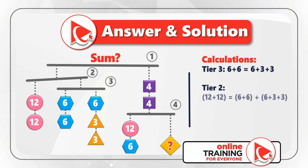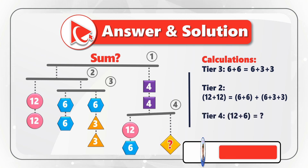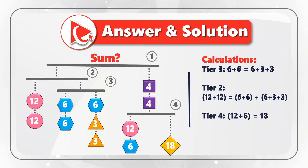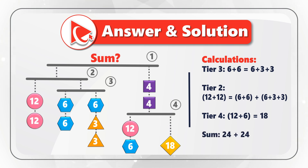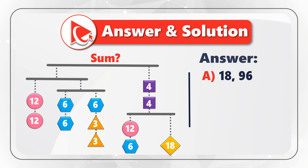This is what keeps Tier 2 in balance. Knowing this logic, we can calculate the missing value on Tier 4. Because Tier 4 needs to remain in balance, the value of 12 plus 6 should equal the missing value, which means the missing value is 18. The total sum is calculated as the sum of all numbers — Tier 2 and Tier 3 total 24 plus 24, plus 48 on the right side of Tier 1, equaling 96. So the correct answer is Choice A — 18 and 96.